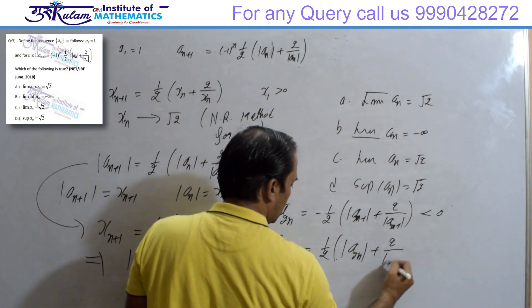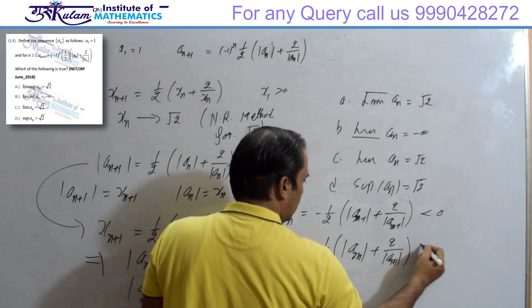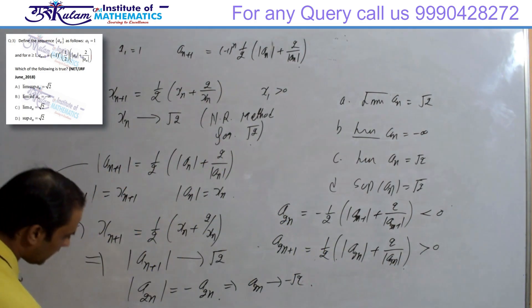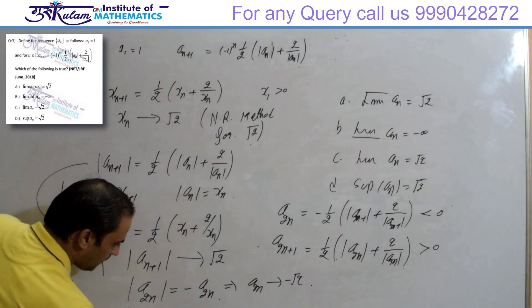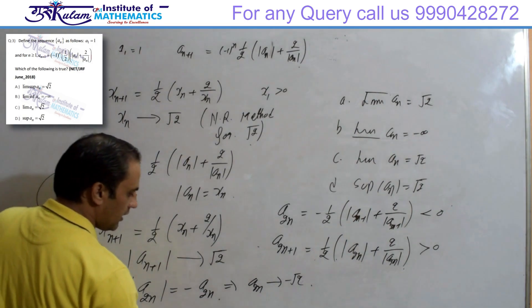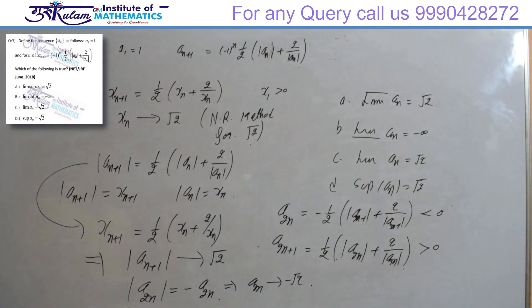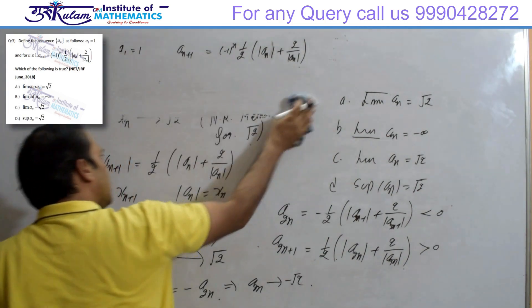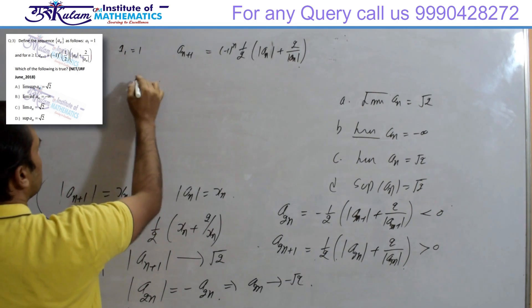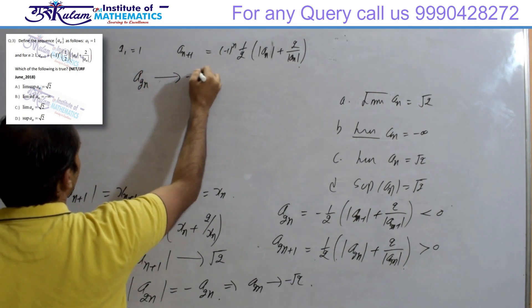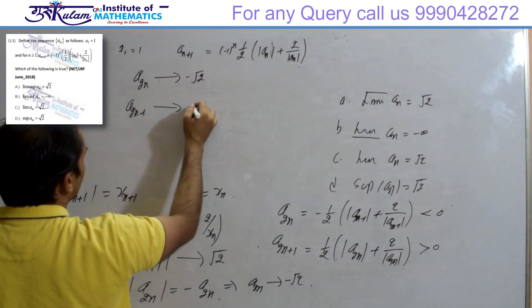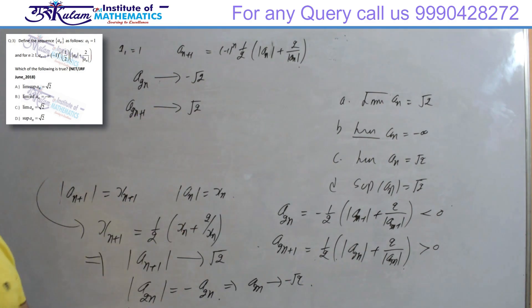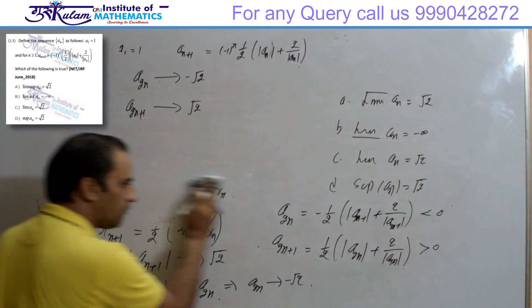For a_{2n+1}: it equals +(1/2)(|a_{2n}| + 2/|a_{2n}|), so the plus sign appears and this quantity is positive. Therefore |a_{2n+1}| represents a_{2n+1} since it is positive, and since this converges to √2, a_{2n+1} converges to +√2. So the odd-indexed subsequence converges to +√2 and the even-indexed subsequence converges to -√2.